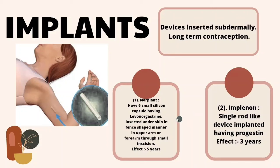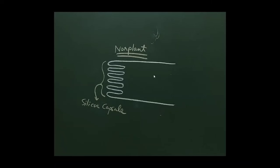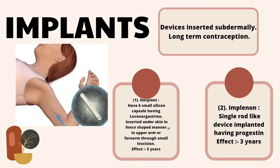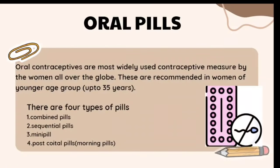The six silicone capsules of Norplant are inserted in a fence-shaped manner under the skin of the underarm, forming a fence-like structure. Implanon is a single rod-like device implanted under the skin that contains progestin — a synthetically prepared progesterone — which works similarly to Norplant, with an effective period of three years.